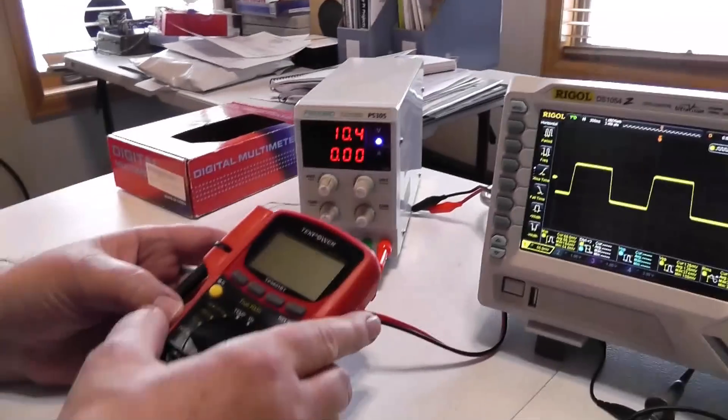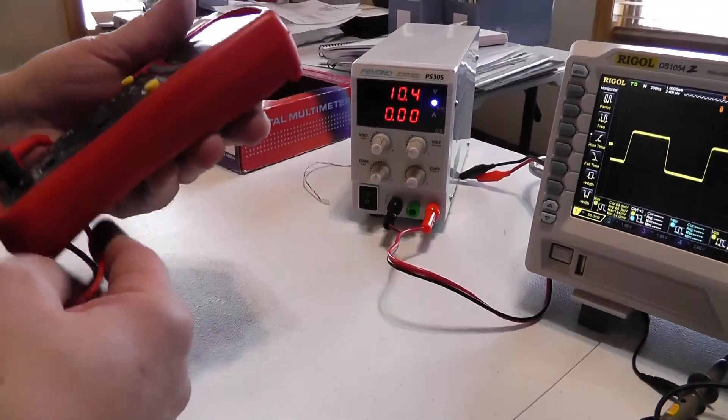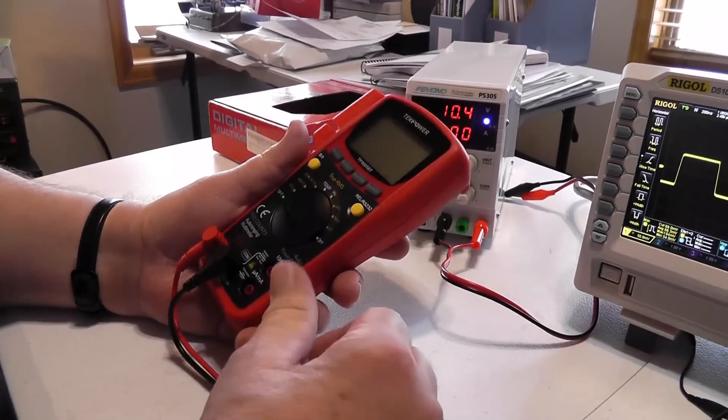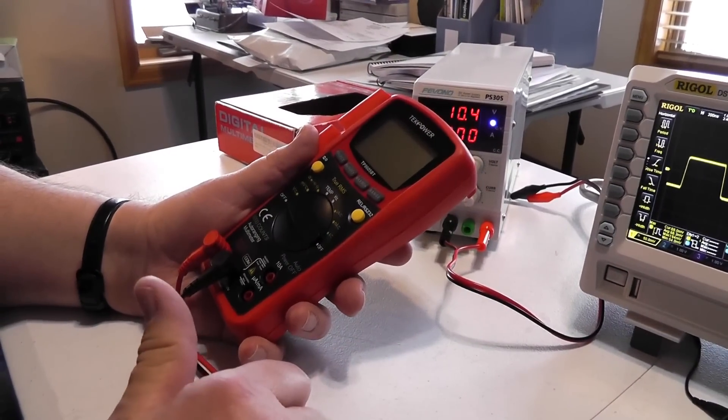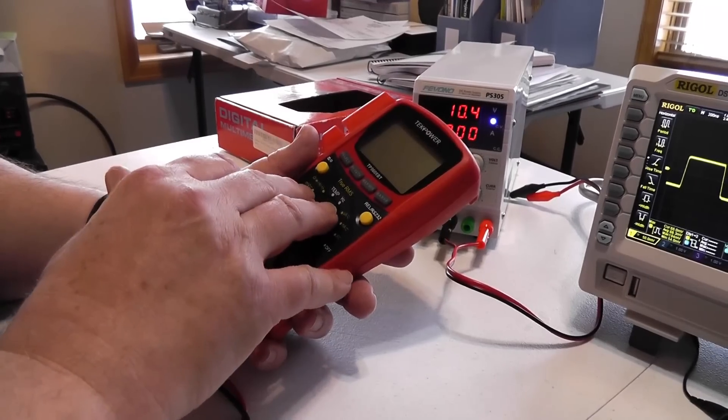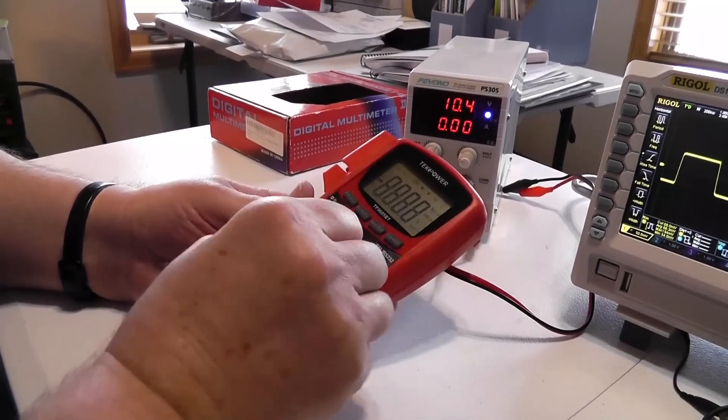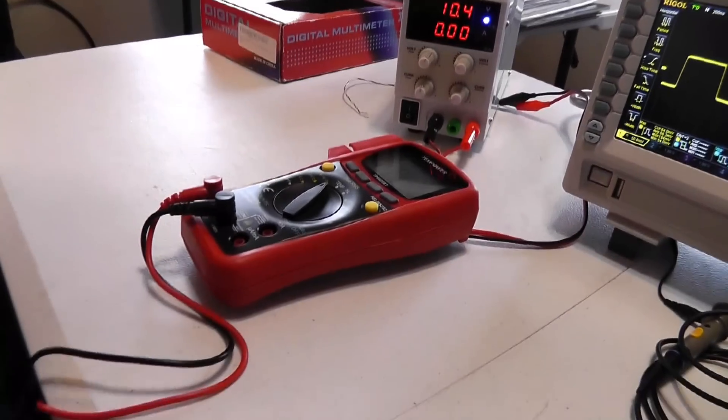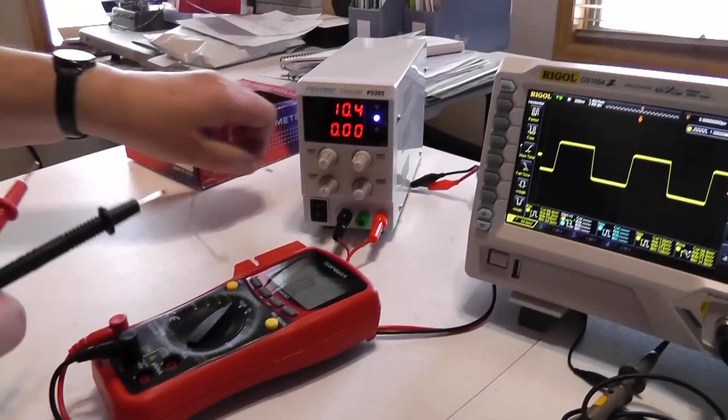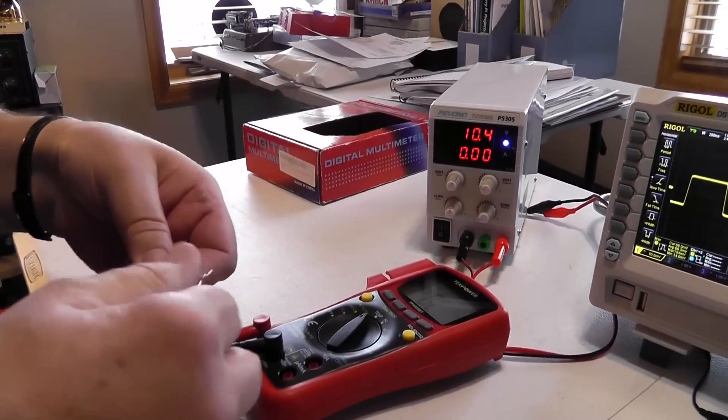Let's come back over here to the volt ohm meter. This is called a multimeter these days. Back in ancient times when I was a young ham, these were called VOMs for volts, ohms, and milliamps. Well, this will do more than that. Let's just try, if the battery isn't completely dead, taking a look at checking the resistance of a resistor here.